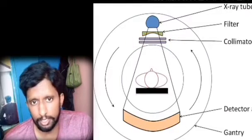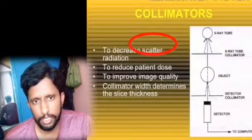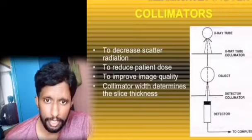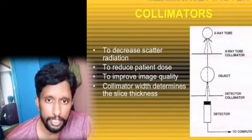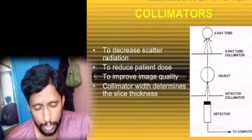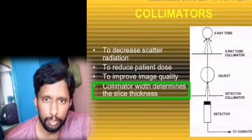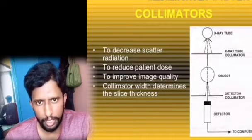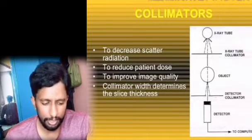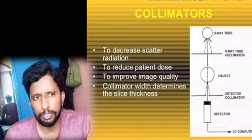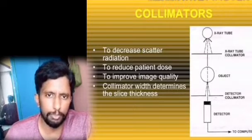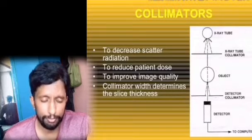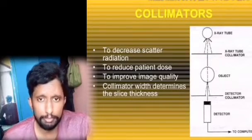The CT collimator has four functions: first, to decrease scatter radiation; second, to reduce patient dose; third, to improve image quality; and fourth, the collimator width determines the size and thickness of the slice — this is called collimation.